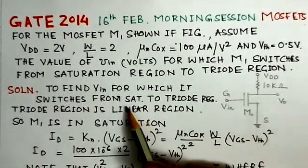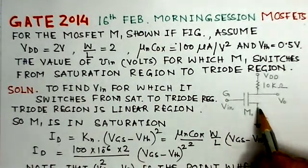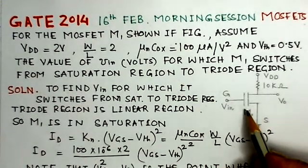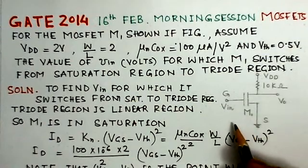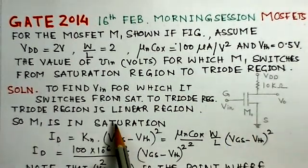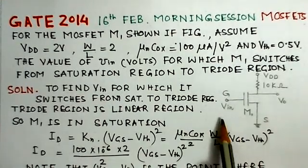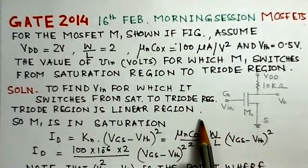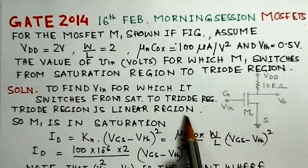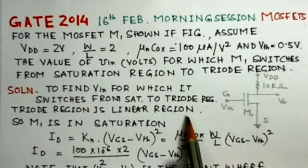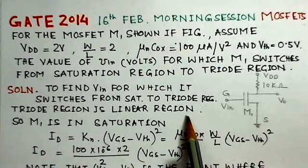What we have to find is, what is the value of VIN for which this MOSFET will switch from saturation to the triode region. Triode region is also said to be a linear region. So, we have to find the value of VIN when it will be making transition from the saturation region to the triode region or the linear region.